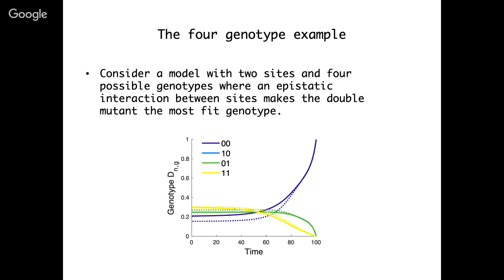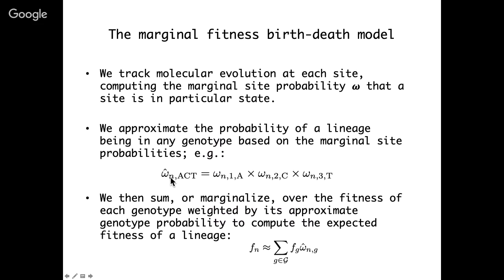If we can approximate the genotype probabilities, we can then compute the fitness of a lineage F_n by marginalizing over all possible genotypes that lineage could be in. We simply sum over all possible genotypes in genotype space and weight each genotype's fitness by the approximate probability that the lineage is in that genotype. Since we're marginalizing over all possible genotypes, that's why we call this the marginal fitness birth-death model.